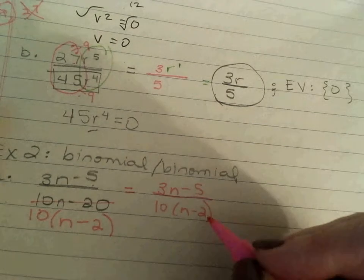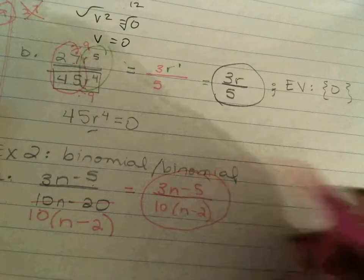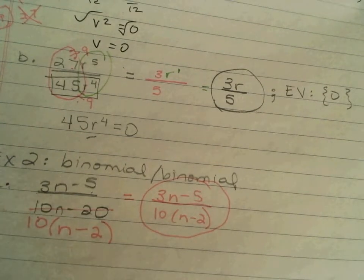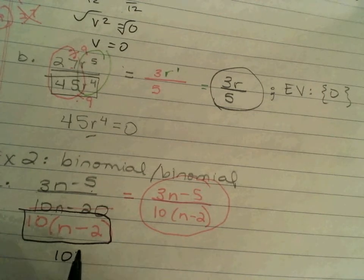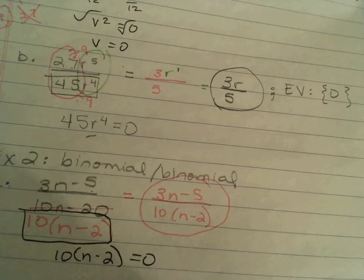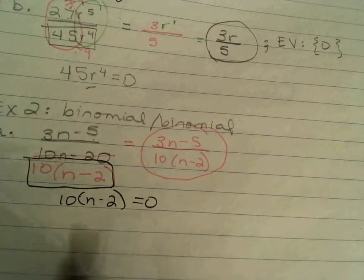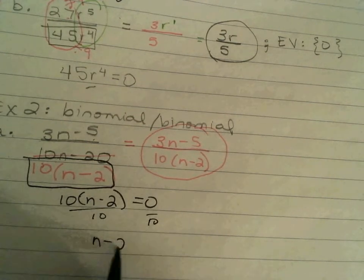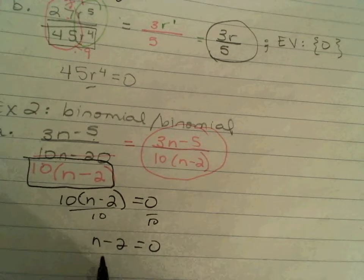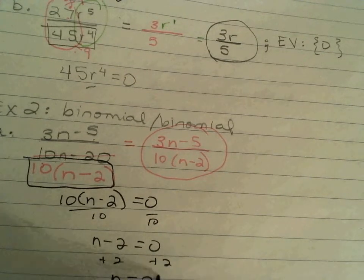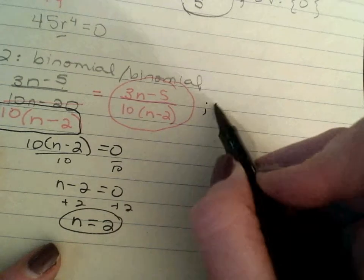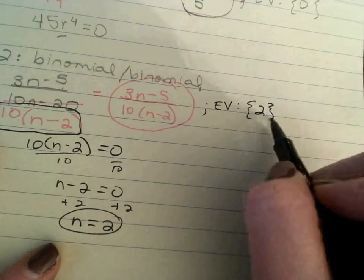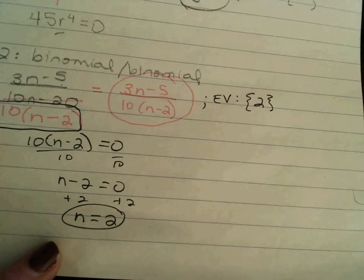So, we can actually leave our answer as 3N minus 5 over 10N minus 2. So, and now, so that's kind of our final answer. We look to see what would make this denominator 0. So, what would make 10N minus 2 equals 0? So, divide both sides by 10, right? So, N minus 2 equals 0. Add 2 to both sides. So, N equals 2. So, then, my excluded value is 2. So, then, my excluded value is 2.